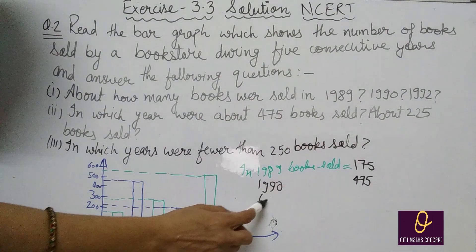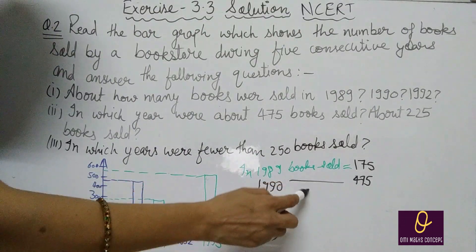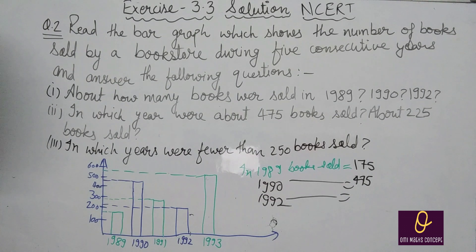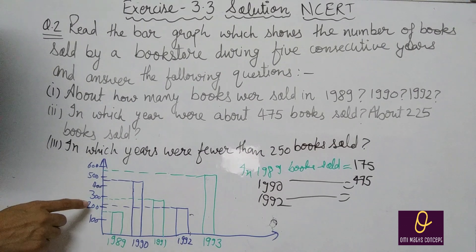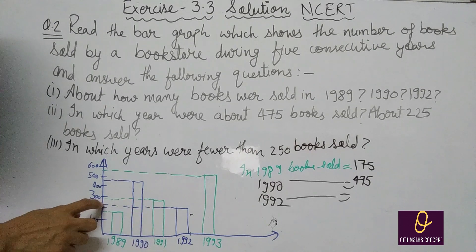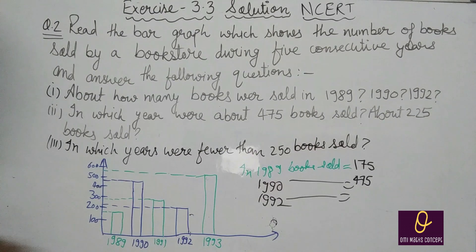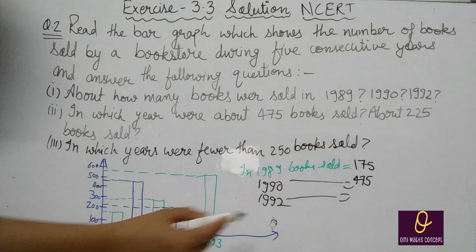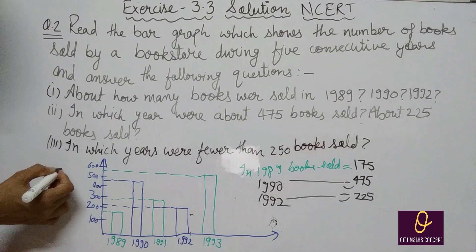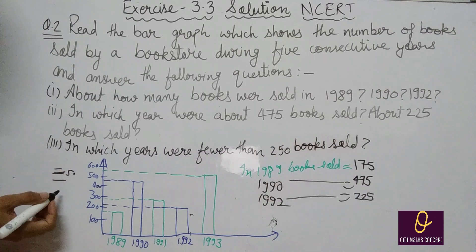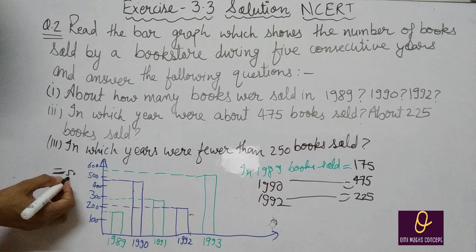1992 के लिए देखिए. 1992 में यह 200 से जादा है. Half से यह कम है. अगर half से कम है तो इसको 25 लो. यह आपको approximately में करना है, तो इसको आप लोगे 225. कैसे? अगर exactly half दिखता है two numbers के बीच में, तो 50 लो. Half का भी अगर half है तो 25 लो.